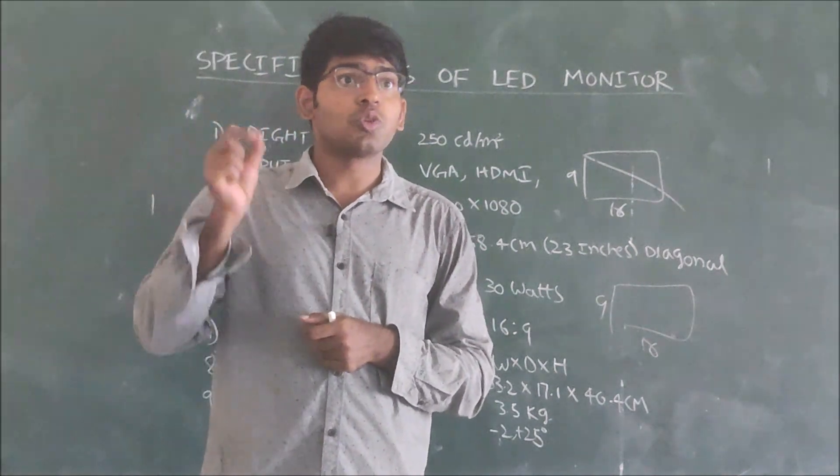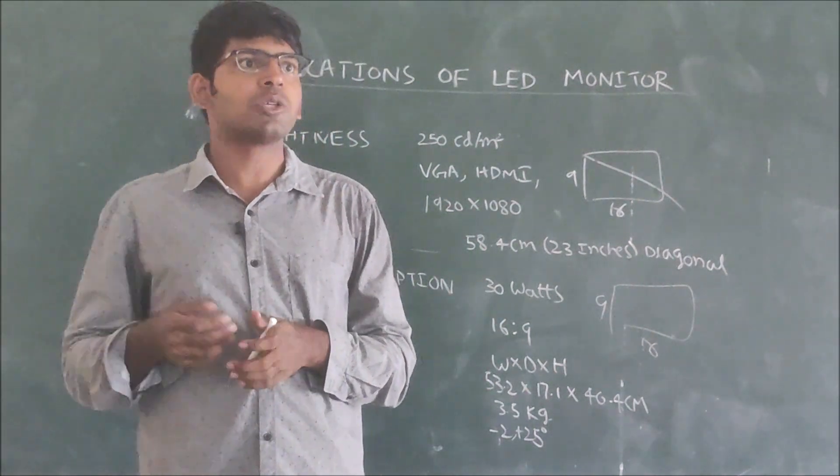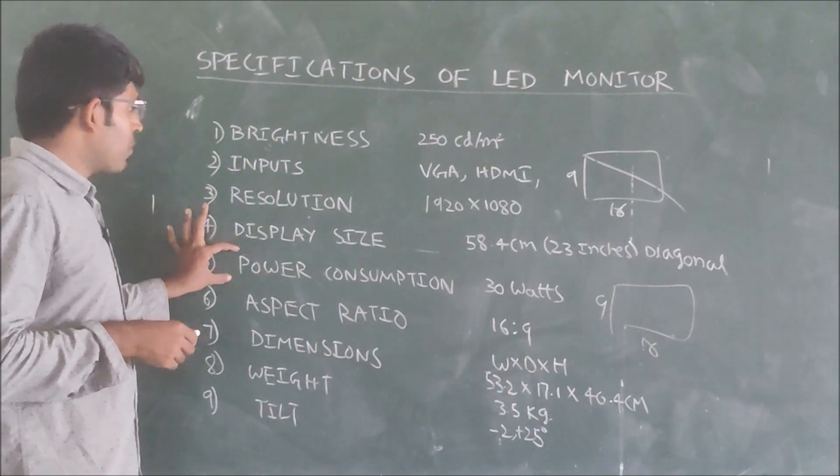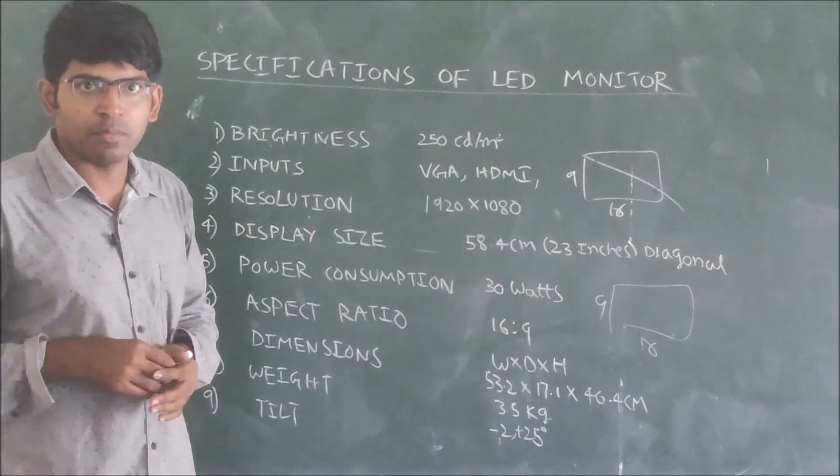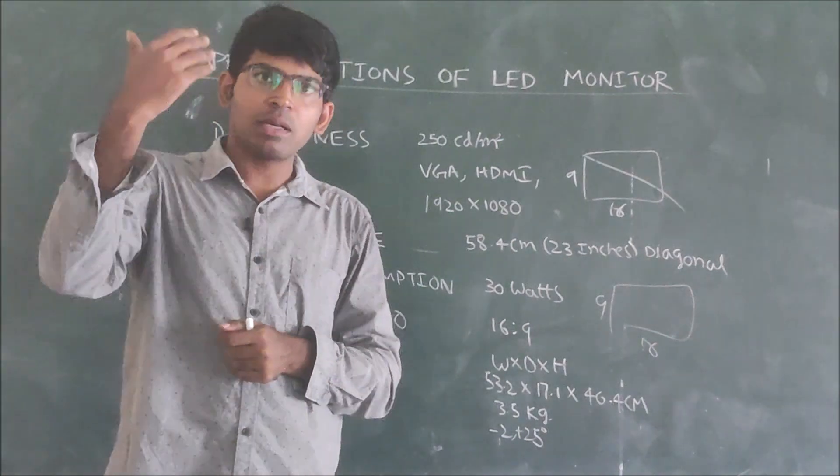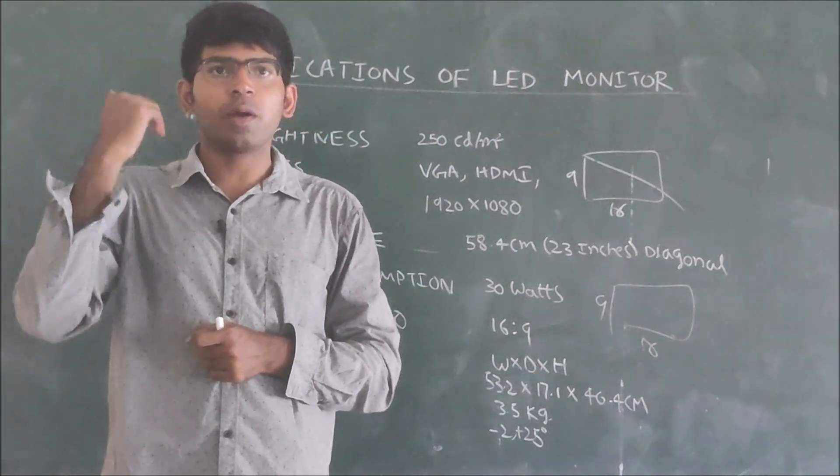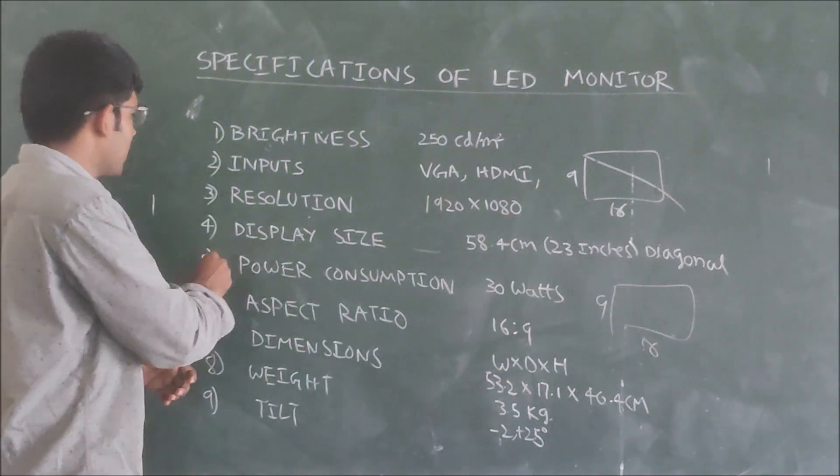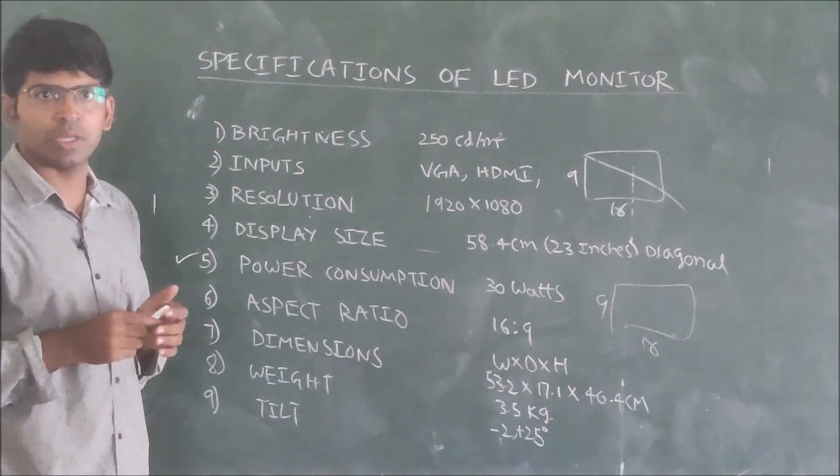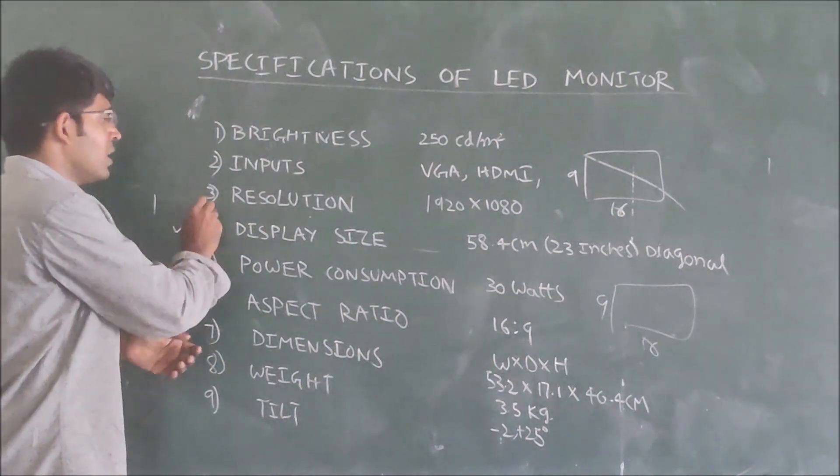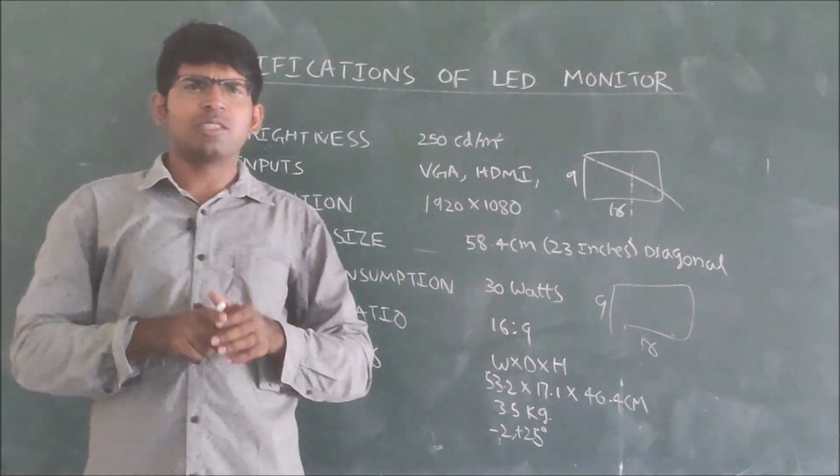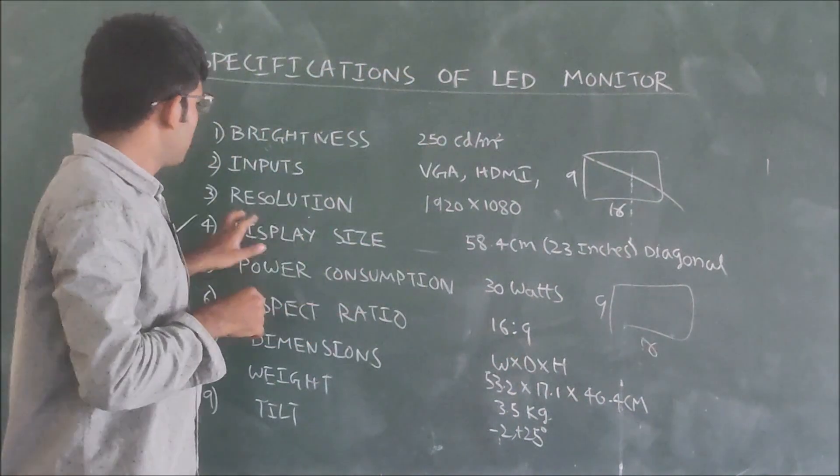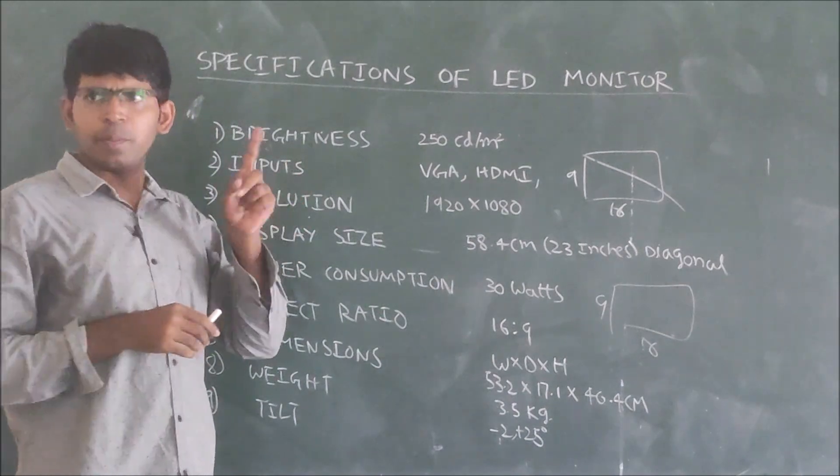As we discussed, why we require specifications? For example, if your requirement - one person says my requirement is power consumption should be less. Give me some LED monitor that should consume only less power. Then your specification is concentrating on the power consumption. Some other person says I want a big display size, because we want to see the cricket on the big screen. To him, display size matters.